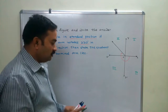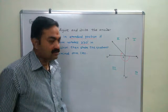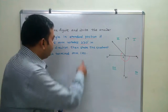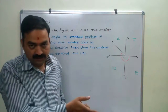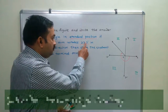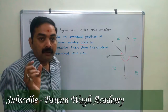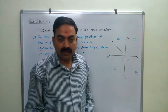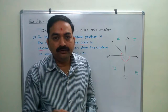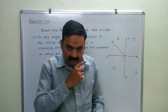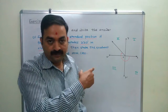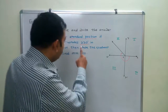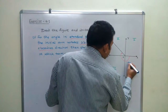In this way we can solve the question. Now, one more point — not asked in the question, but important: if the initial arm rotates in the clockwise direction, the angle is negative. So this is a minus 220 degree angle, because it is rotating clockwise.